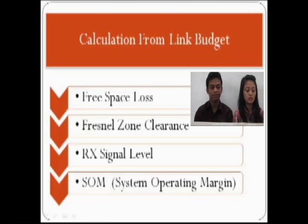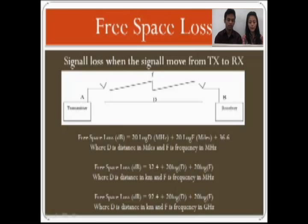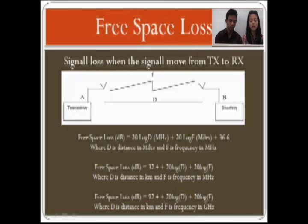Some examples of calculations from Link Budget. The first is free space loss, then Fresnel zone clearance, RX signal level, and the last is SOM or System Operating Margin. Free space loss is the signal loss when the signal moves from TX to RX. The distance between two antennas is d, and the transmission frequency used is f — d in kilometers and f in megahertz. There are some formulas to count FSL. If we use d as distance in miles and f as frequency in megahertz, we can use FSL in dB equals 20 log f (MHz) plus 20 log d (miles) plus 36.6.